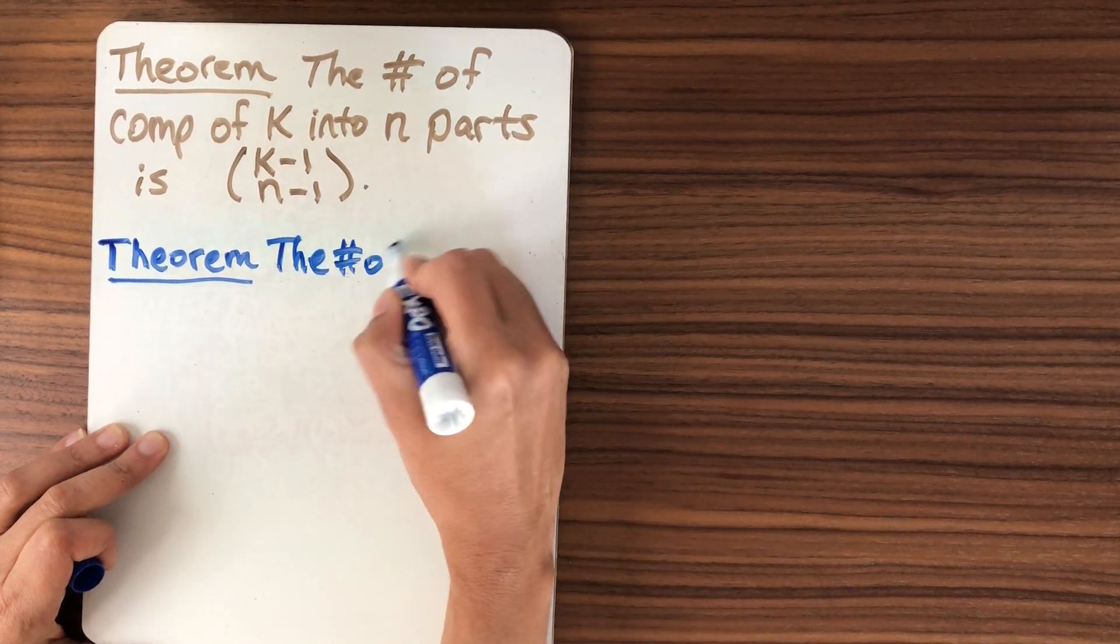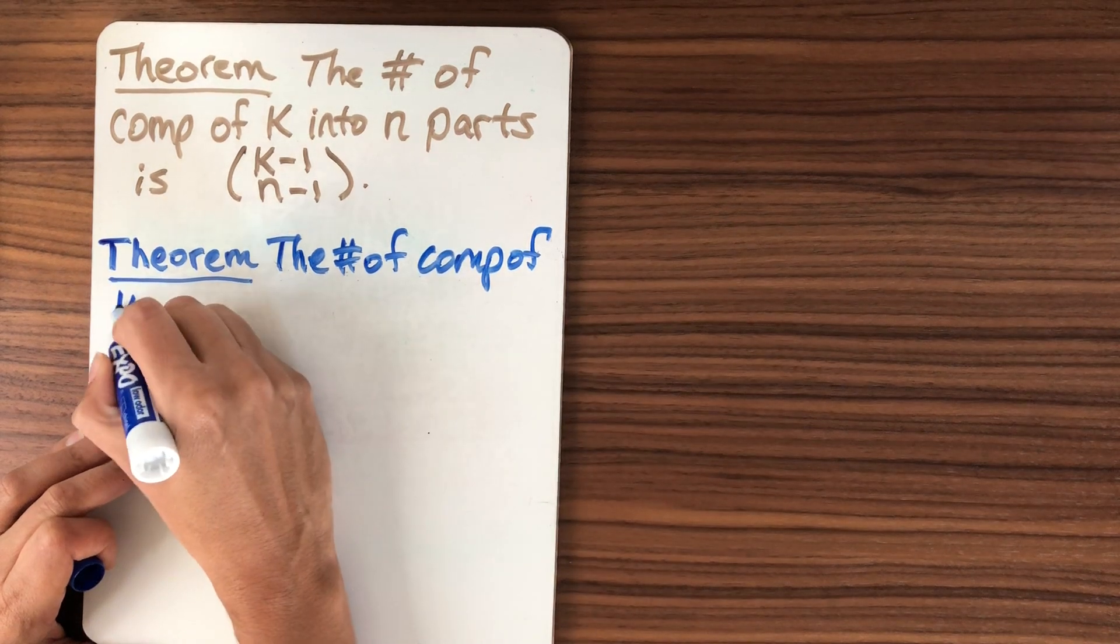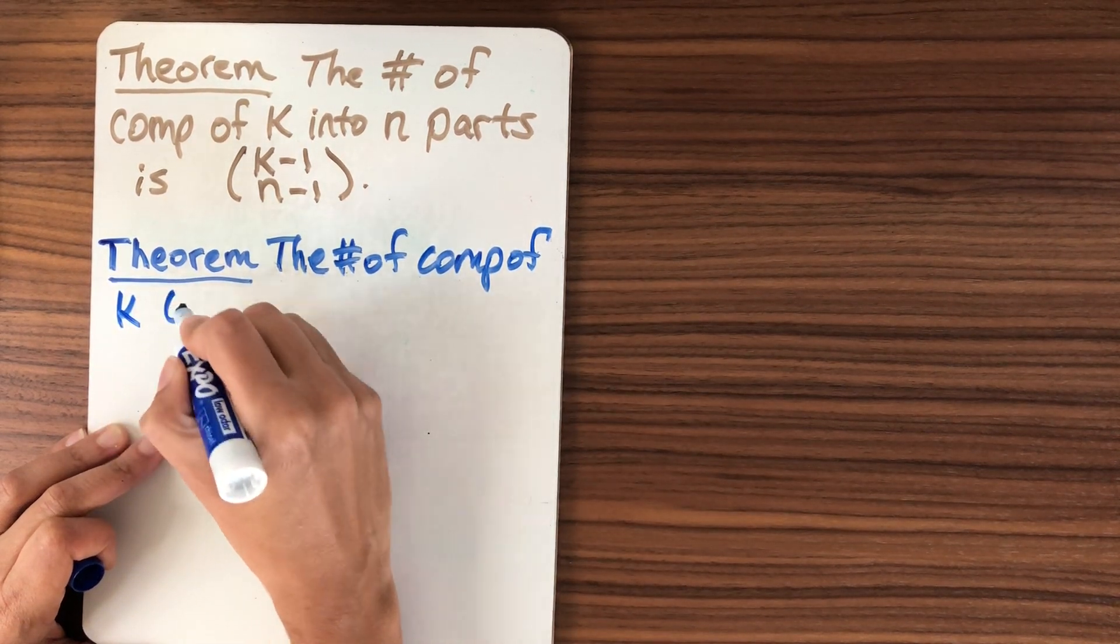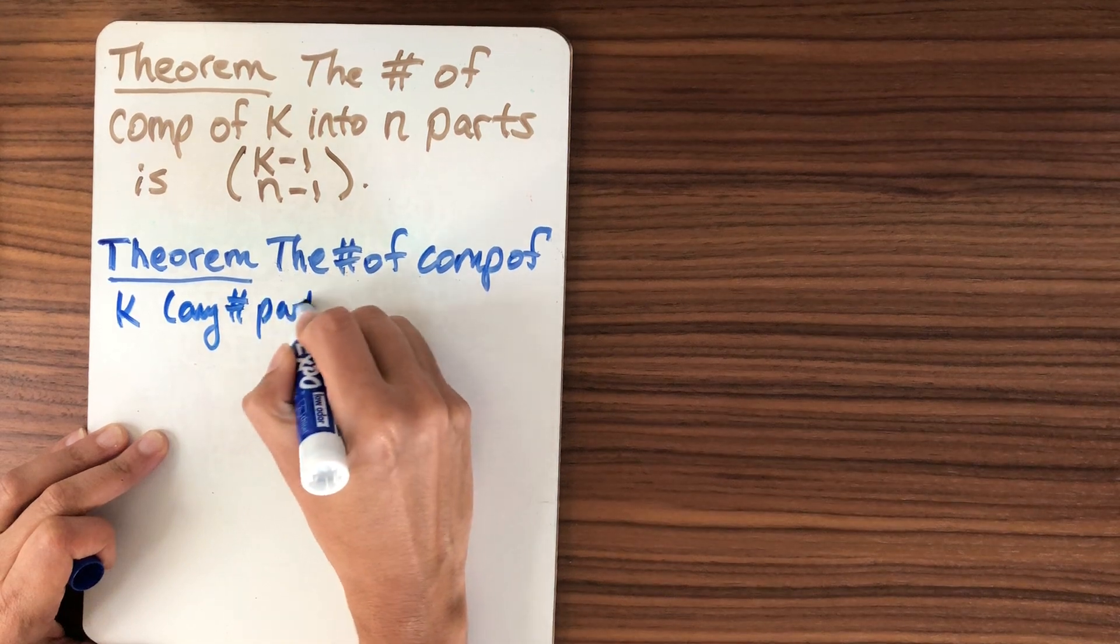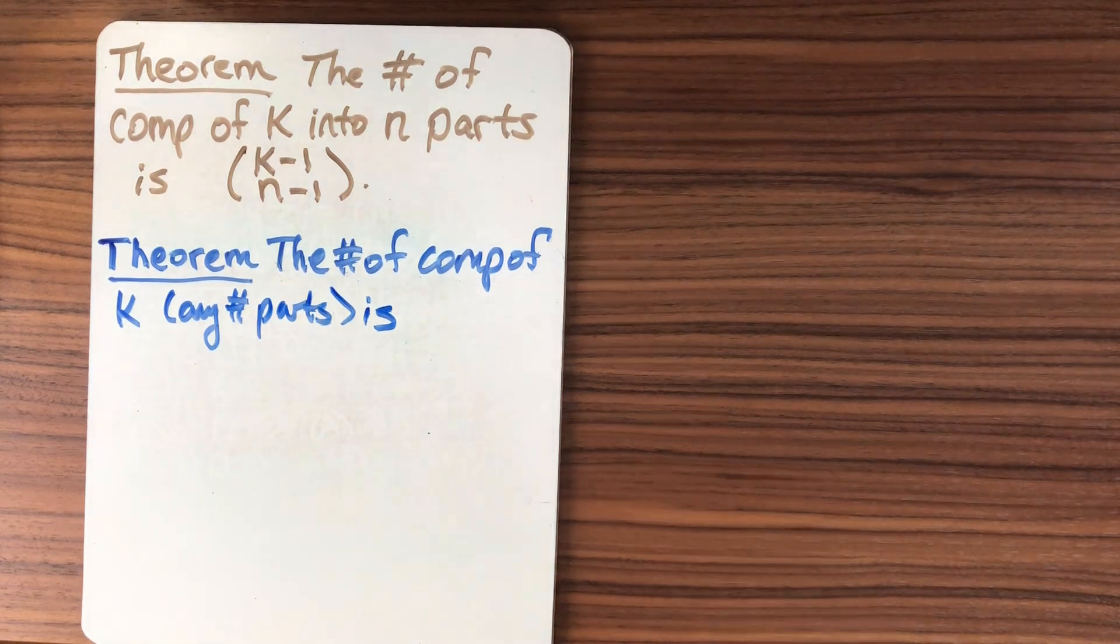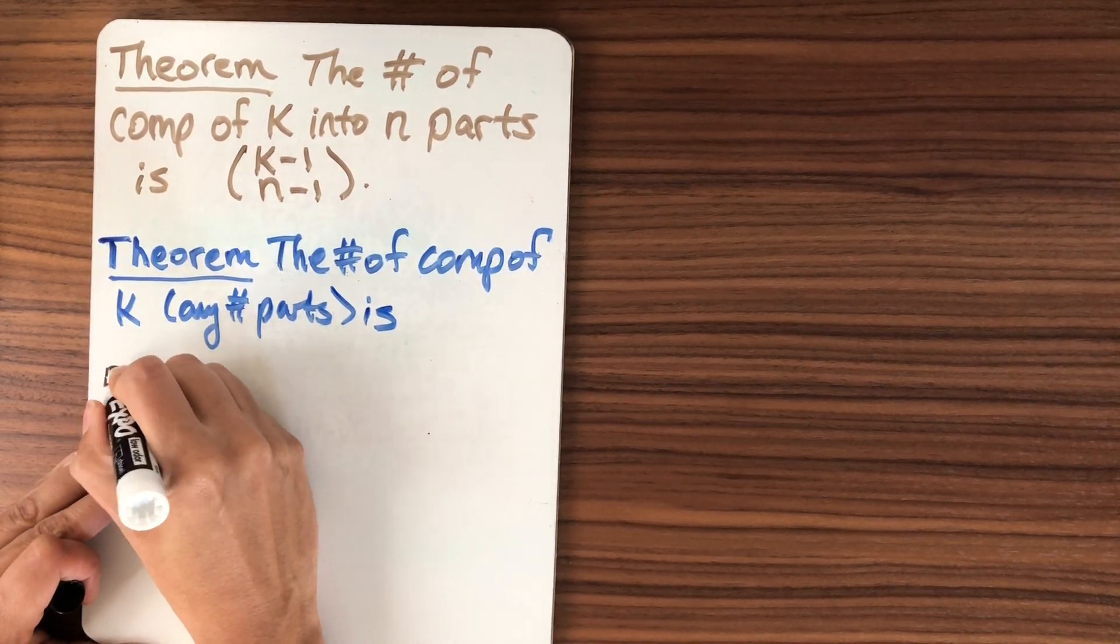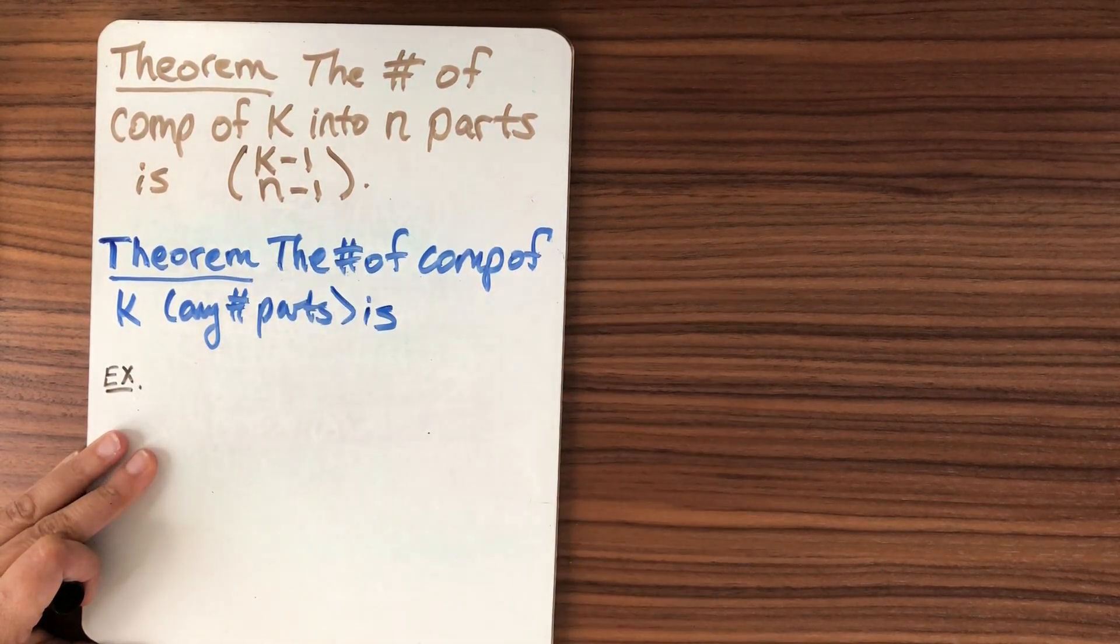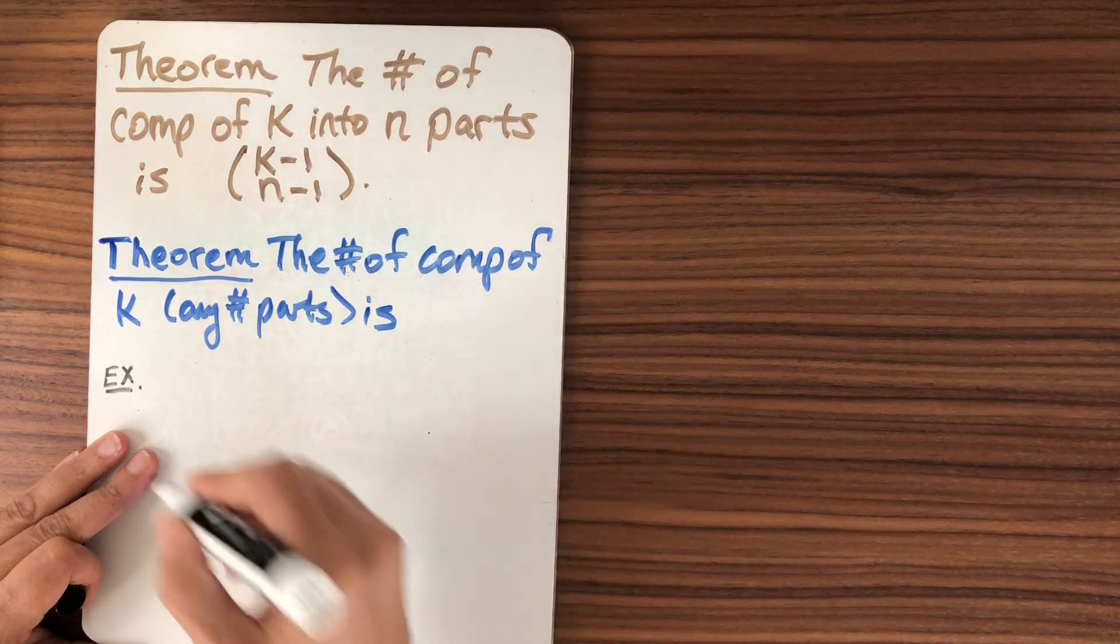The number of compositions of k, any number of parts I'll emphasize, is what? So when we're faced with a problem like this, of course what we want to do is some examples. So let's gather some data. We could figure it out algebraically, but it's nice to get an intuition for what you think the answer is before you go off and try to prove it.